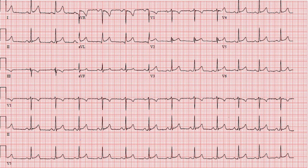This is a 12-lead EKG. We have lead 1, 2, 3, lead AVR, AVL, AVF — that's 6. Then leads V1, V2, V3, V4, V5, and V6. And if we do some simple math, that adds up to 12 different leads.